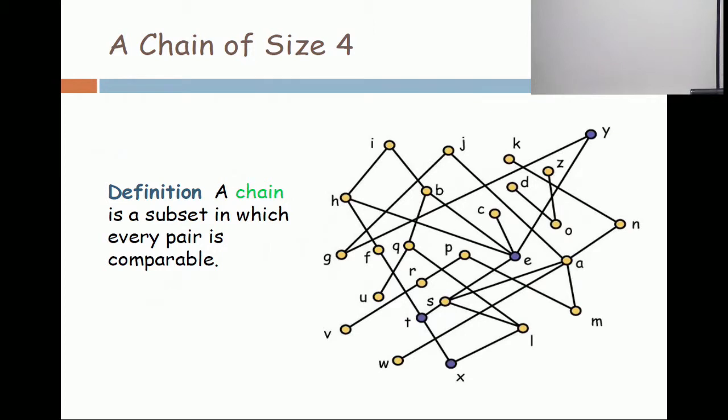A chain is a subset in which every pair is comparable. The blue points that have been highlighted there - X, T, E, Y - form a chain, a chain of size 4.